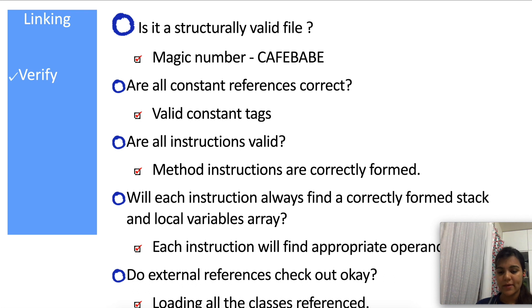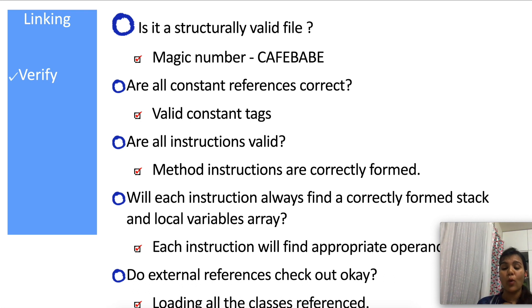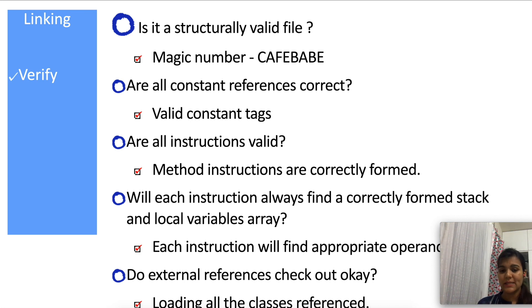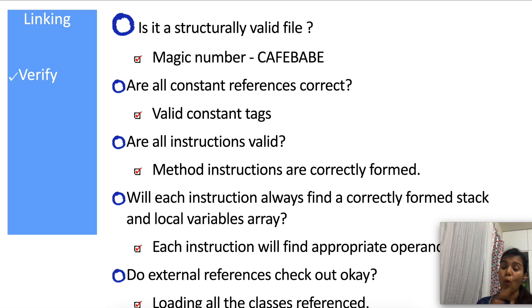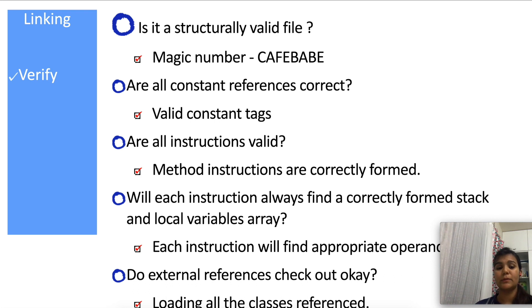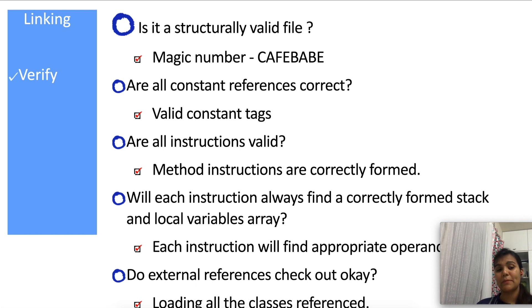The last verification point is external references check. This is when loading all the classes that are referenced — if a class uses references pointing to external classes present in the constant pool, then all those should have correct references so everything is mapped correctly. This is one more point checked during verification.